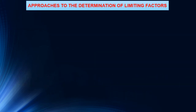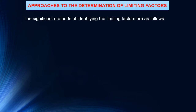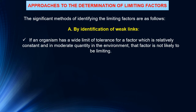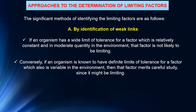Regarding the different approaches to determination of limiting factors, it is important for ecologists to realize the aims of environmental analysis in terms of limiting factors, considering through observation, analysis, and experiments which factor is significant and how it affects the individual, population, and community. The first method is identification of the weaklings. If an organism has a wide limit of tolerance for a relatively constant factor present in moderate quantity, then that factor is not likely to be limiting. Conversely, if an organism has definite limits of tolerance for a factor that is also variable in the environment, then that factor deserves careful study because it might be the limiting one.